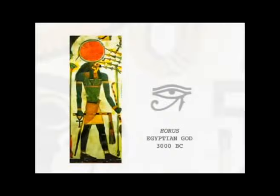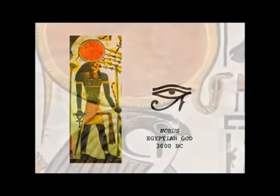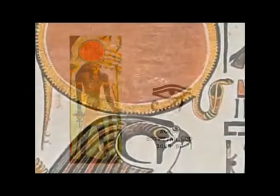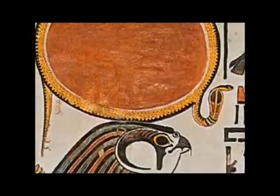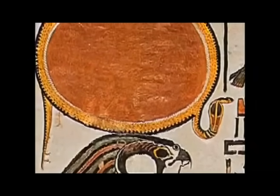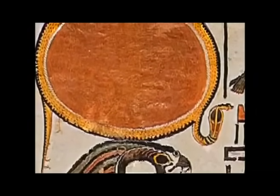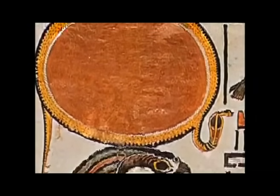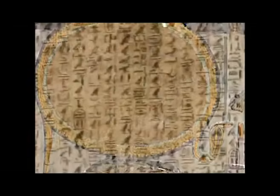This is Horus. He is the sun god of Egypt of around 3000 BC — the sun anthropomorphized — and his life is a series of allegorical myths involving the sun's movement in the sky. From the ancient hieroglyphics in Egypt, we know much about this solar messiah.